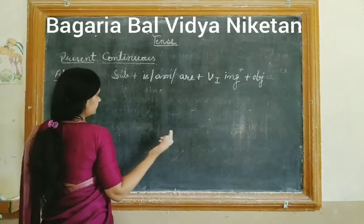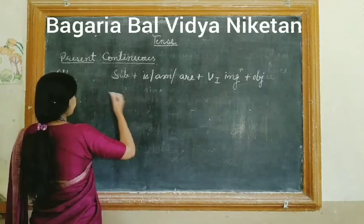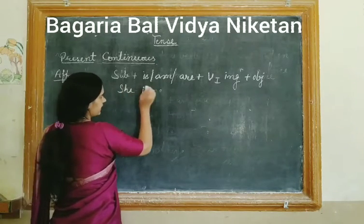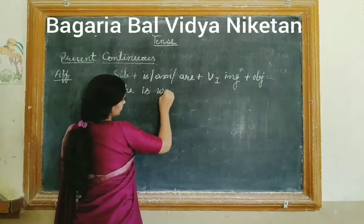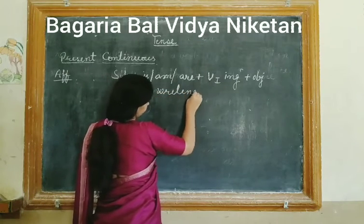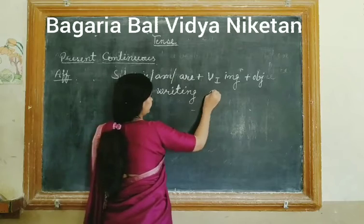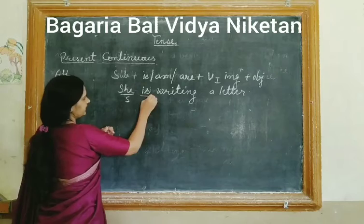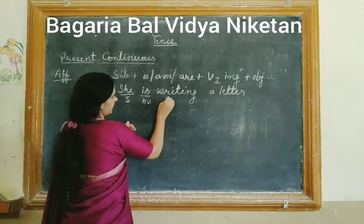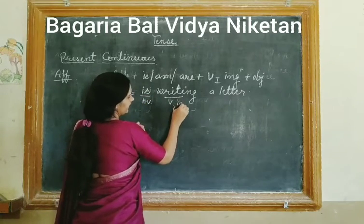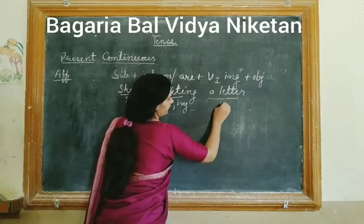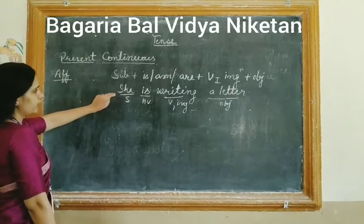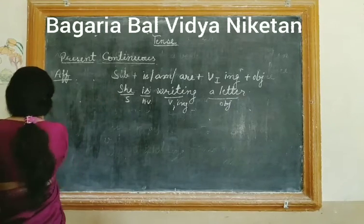Ek general example dekhte hain pura structure ka: 'She is writing a letter.' 'She' ke saath singular hai, isliye 'is' ka use kiya gaya. Divided into parts — subject: 'She'; helping verb: 'is'; verb ki first form mein -ing: 'writing'; object: 'a letter'. Is tarike se ham formula ki according apne sentences likh sakte hain.